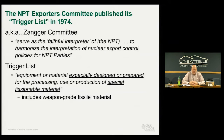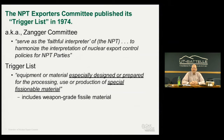The NPT has a section relating to nuclear exports. A committee called the NPT Exporters Committee, also called the Zanger Committee, published what was called a trigger list in 1974. It was set up to harmonize interpretation of the NPT's export control policies. The trigger list defined a key term: equipment or material especially designed or prepared—referred to as EDP—for the processing, use, or production of special fissionable materials. EDP is a term of art in the nuclear export control world.